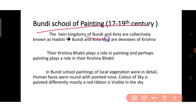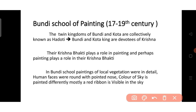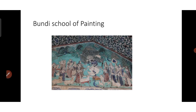The Bundi school of painting spans the 17th to 19th century. The twin kingdoms of Bundi and Kota are collectively known as Hadoti, regions from Rajasthan. The Bundi and Kota kings were devotees of Krishna, so Krishna Bhakti plays an important role in their painting. In Bundi school paintings, local vegetation is depicted in detail, human faces are round with pointed noses, and the sky is painted differently — mostly a red ribbon is visible in the sky.